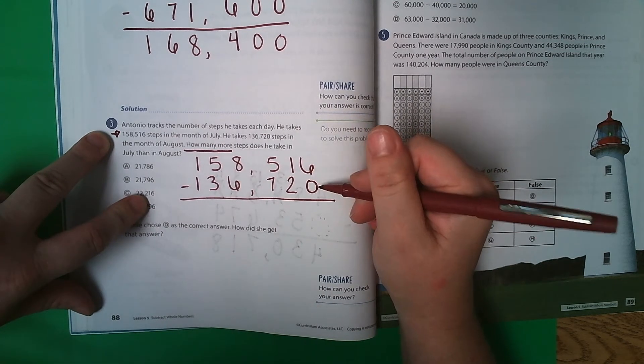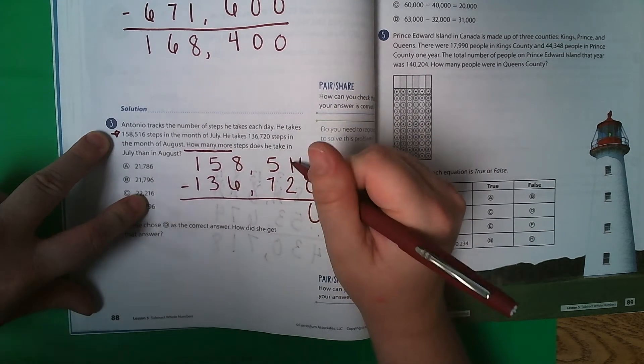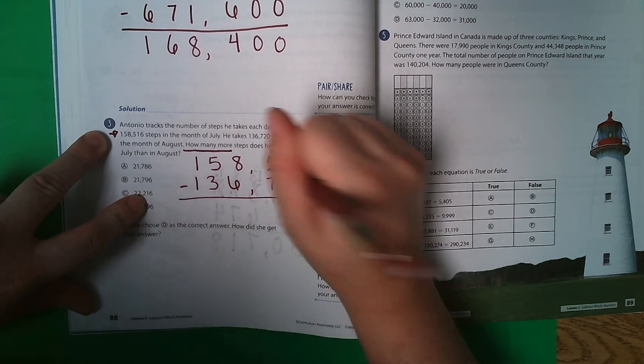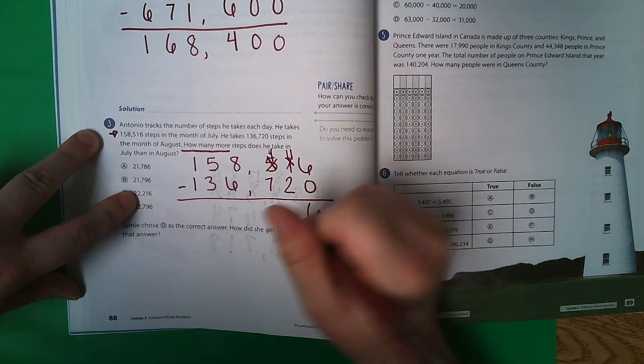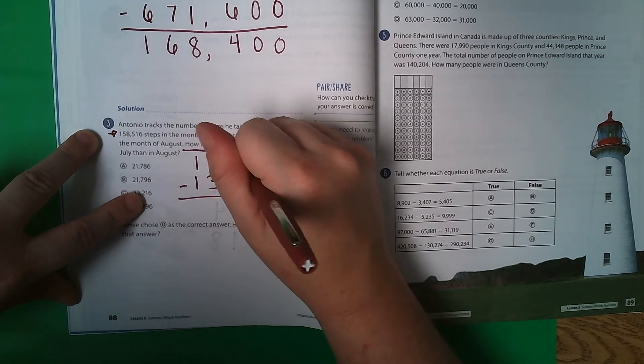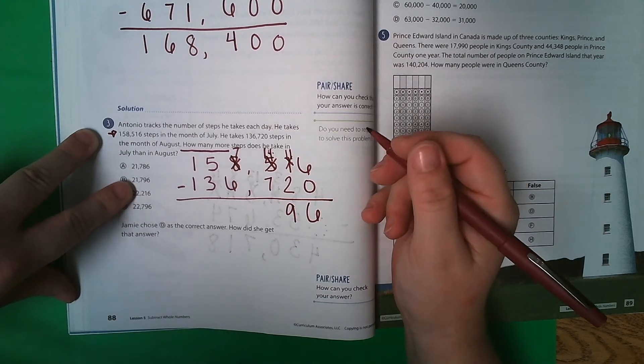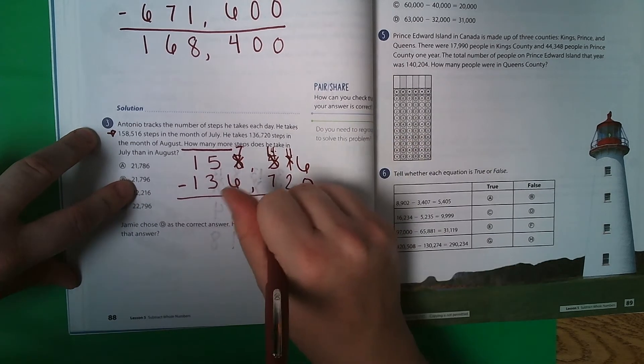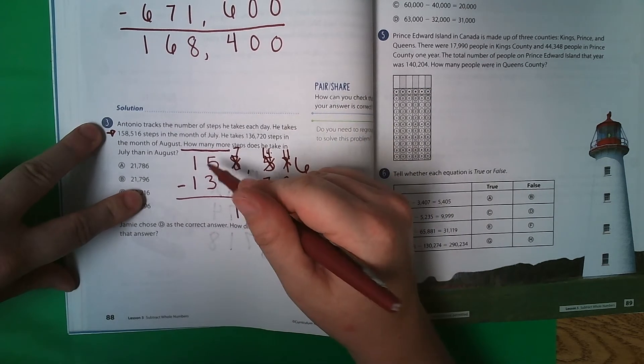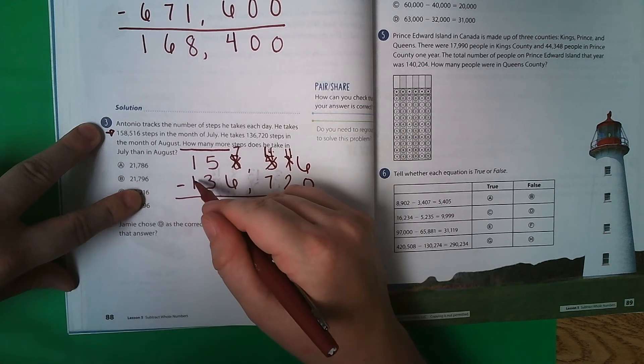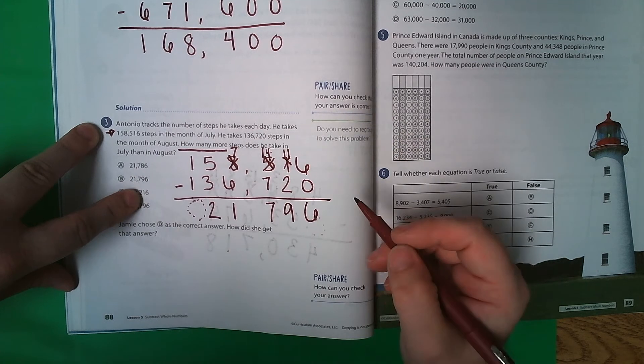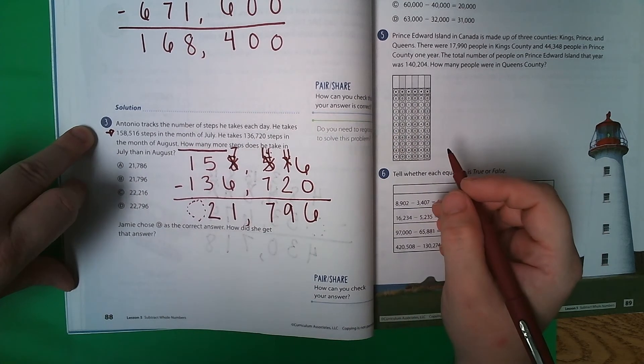So 158,516 minus 136,720. 6 minus 0 is 6. 1 minus 2, I cannot do that. So this 5 becomes a 4, and 1 becomes 11. 11 minus 2 is 9. 4 minus 7, I can't do that. So 8 becomes a 7, and 4 becomes 14. 14 minus 7 is 7. 7 minus 6 is 1. 5 minus 3 is 2. And 1 minus 1 is 0, but we don't technically have to put it, so it's kind of like an invisible 0.